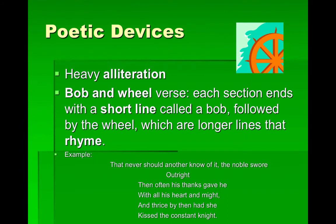Poetic devices you will see in medieval romance poems include heavy use of alliteration and bob and wheel verse, meaning each section ends with a short line called a bob, followed by the wheel, which are longer lines that rhyme. Here's an example: 'That never should another know of it, the noble swore outright, then often his thanks gave he, with all his heart and might. And thrice by then had she kissed the constant knight.'